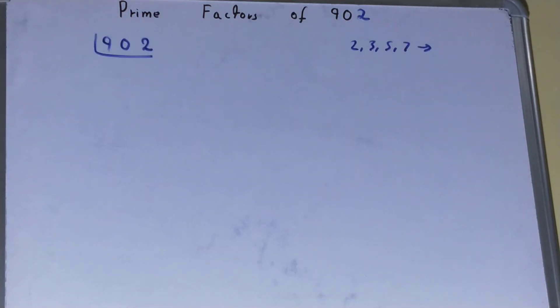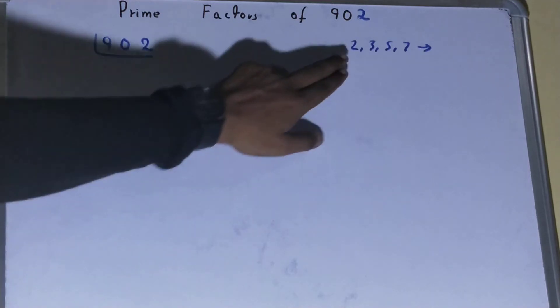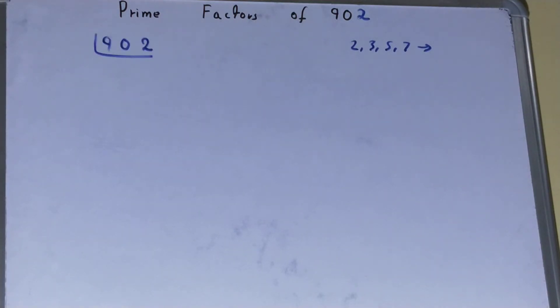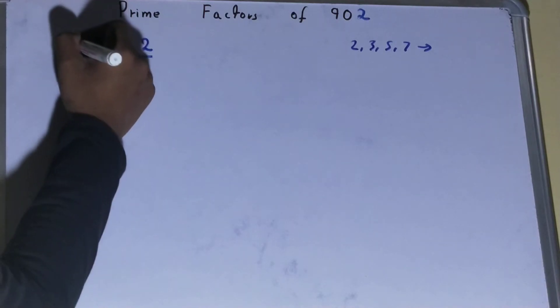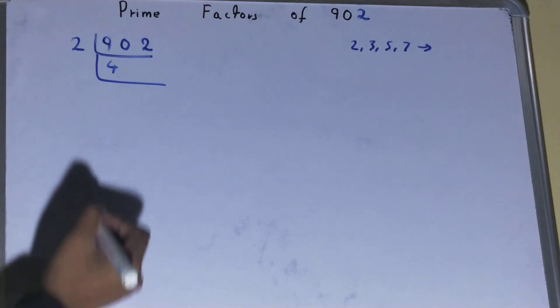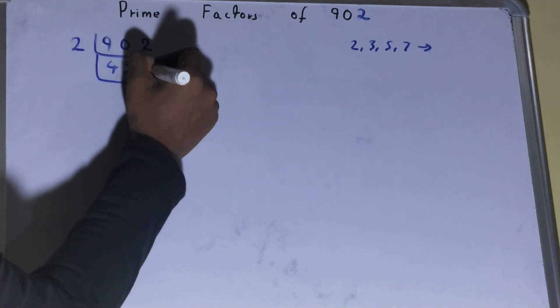We will be starting with the lowest prime number we have, that is 2. Is the number 902 divisible by 2? Yes, it is because 902 is an even number. So divide it and you will be left with 451.